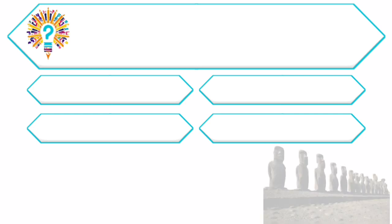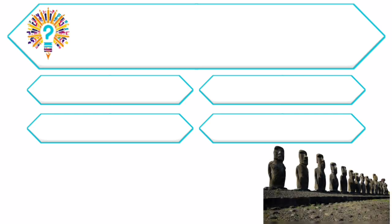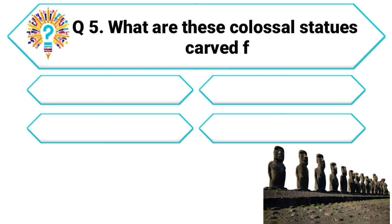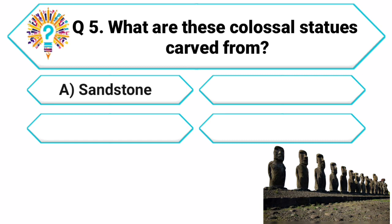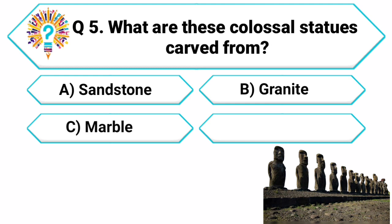Question 5. Let's talk about the mesmerizing Moai statues of Easter Island. What are these colossal statues carved from? Your options are: A. Sandstone, B. Granite, C. Marble, D. Volcanic rock.